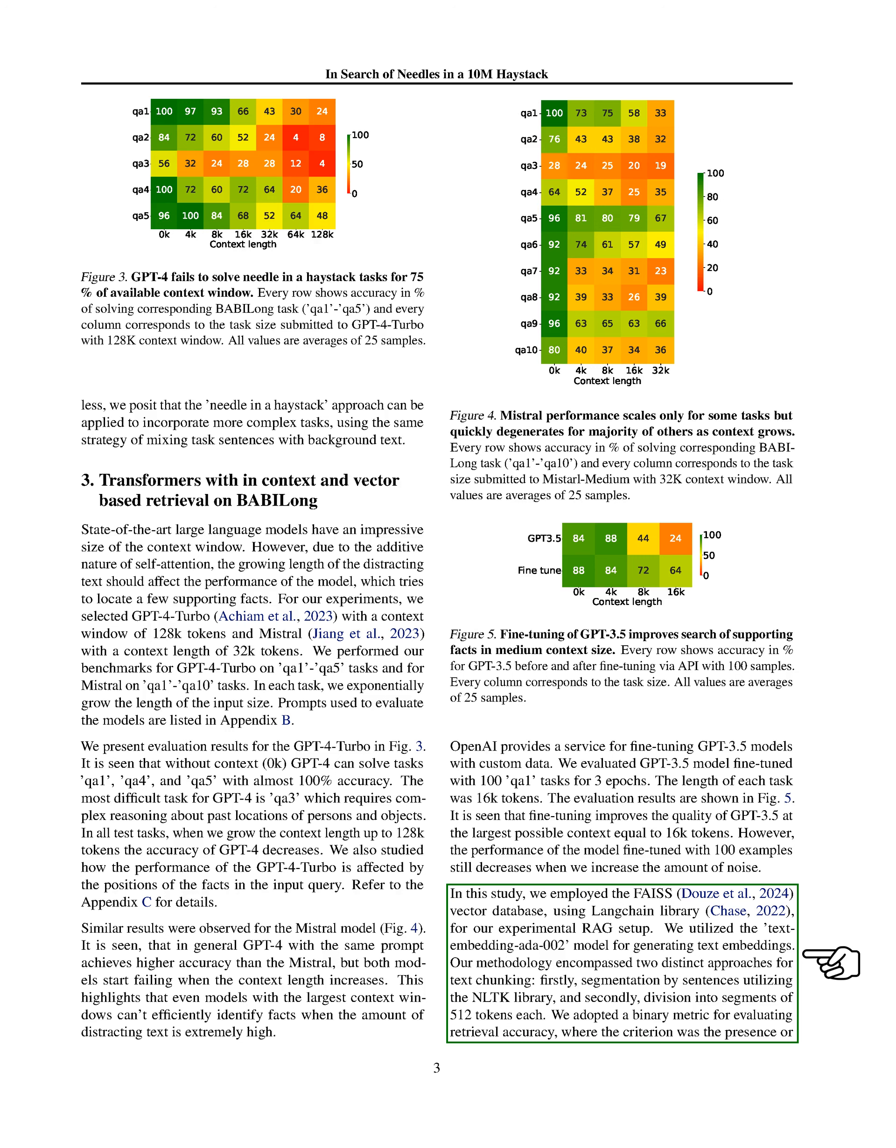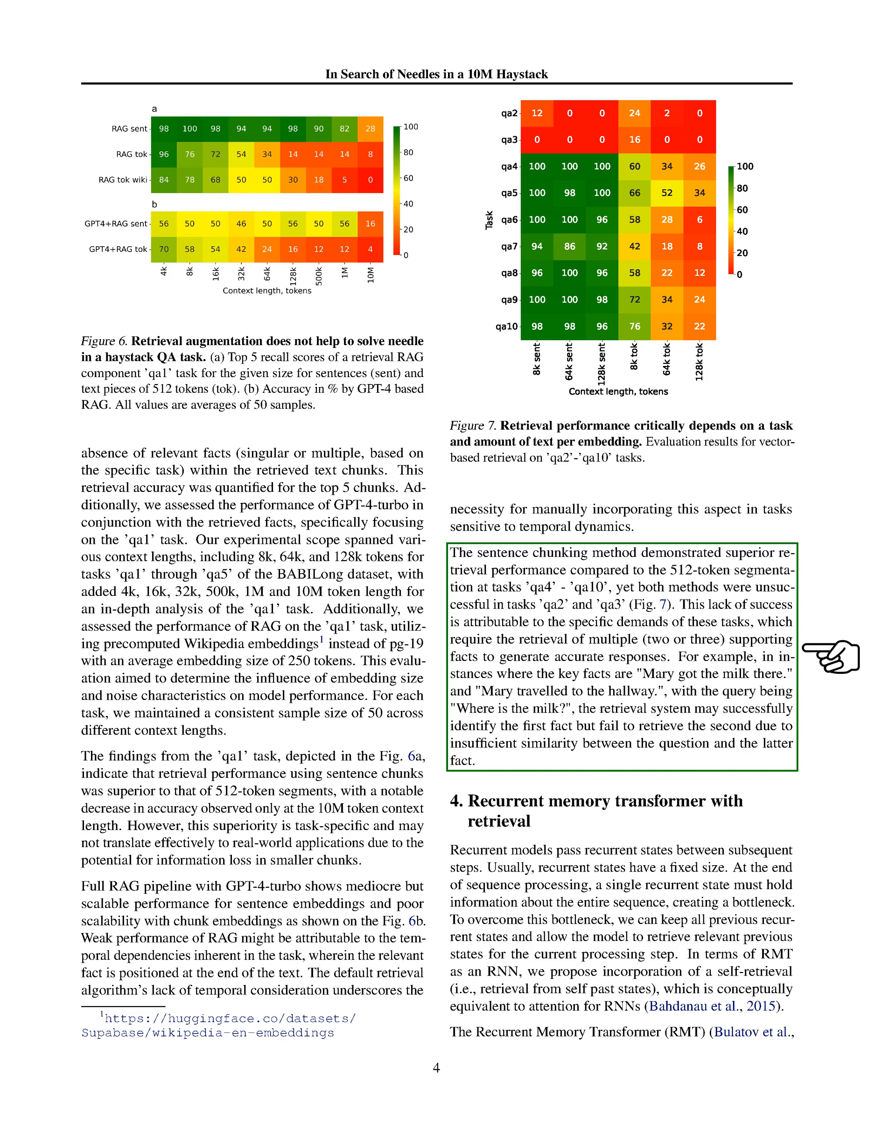We employ the FAISS vector database and the Langchain library for our experimental setup with RAG, using two distinct approaches for text chunking. Our findings indicate that retrieval performance varies with the chunking method and the context length, highlighting the challenges and potential strategies for improving model performance in processing long documents.